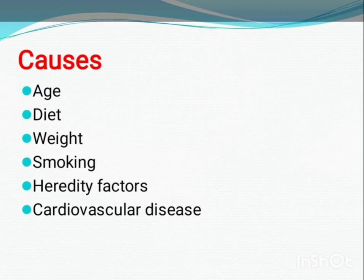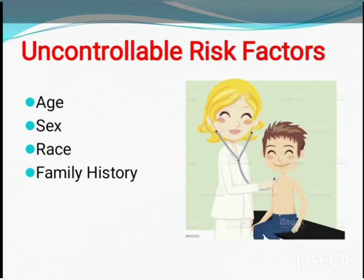AMD is multifactorial, meaning it has many possible causes. It can be due to biological inheritance, smoking, obesity, unbalanced diet, or cardiovascular diseases. There are some risk factors you cannot control. Age is the factor that most increases your chance of developing AMD — the risk is about 8.5 percent for people aged 43 to 54, but up to 37 percent for people over 75.